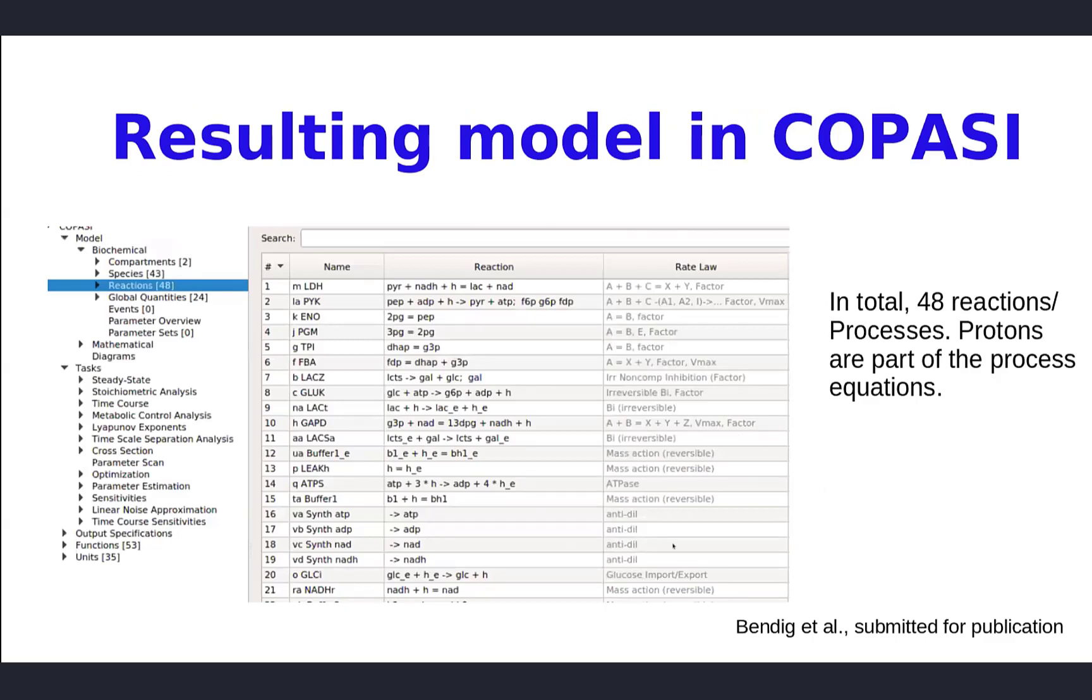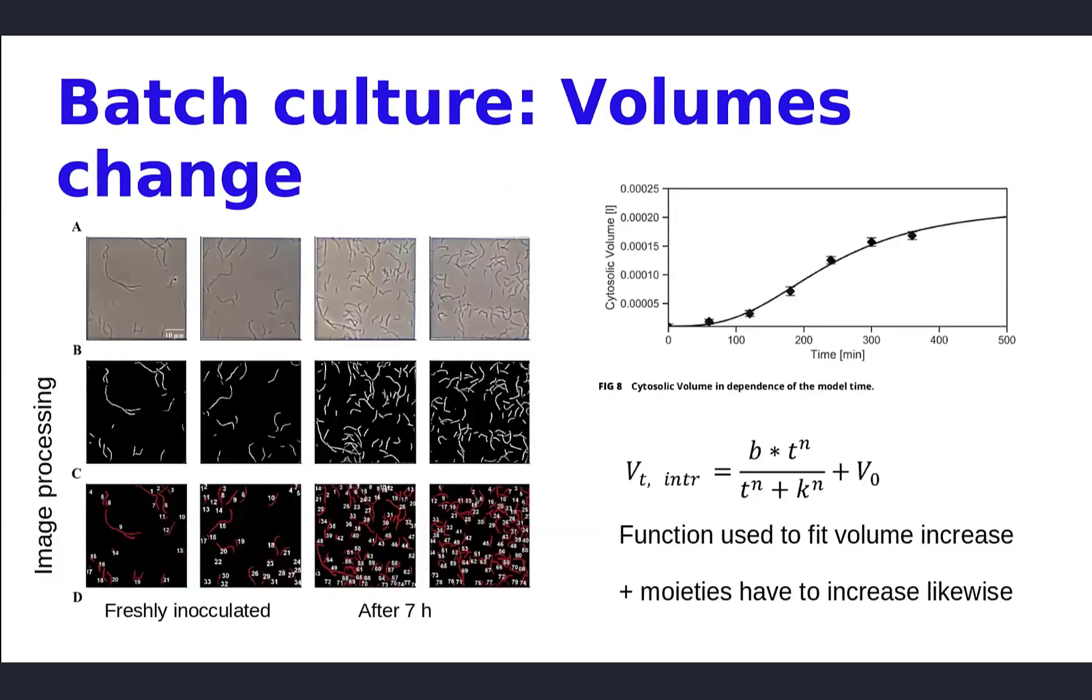Why is this set of anti-dilution reactions important? You have to increase the moieties in your system. If you double the cellular volume, you don't want a decrease in concentration of these moieties. You assume that ATP, ADP, NADPH, and similar are kept constant. You have to include a function that prohibits dilution of the concentrations—they have to increase exactly with the same factor as the volume increases.